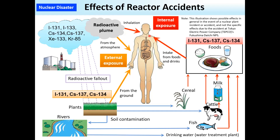Radioactive iodine, iodine-131, and caesium-137 are deposited on the ground surface while a plume passes. Therefore, external exposure from deposited radioactive material may occur even after the plume has passed. Internal exposure can also occur if one directly inhales radioactive material while the plume passes, or if one consumes drinking water or food contaminated with deposited radioactive material.